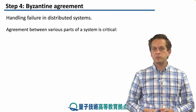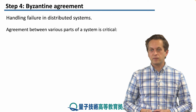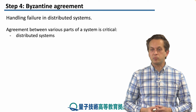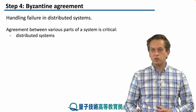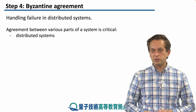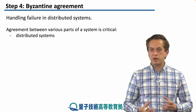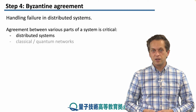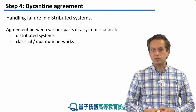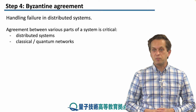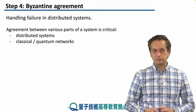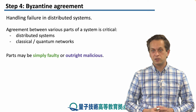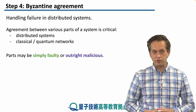Agreement between various parts of a system is critical. Consider a distributed system — for example, a distributed computation. If one of the nodes that's part of the distributed system fails, this might adversely affect the other nodes and the computation itself. Failure in classical networks as well as quantum networks must be dealt with, and Byzantine agreement is one such protocol.